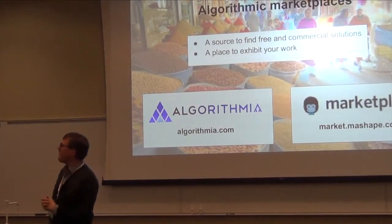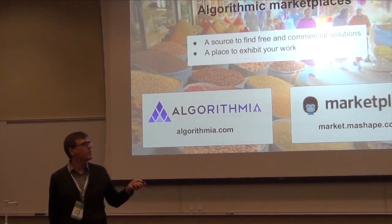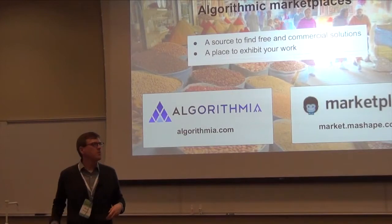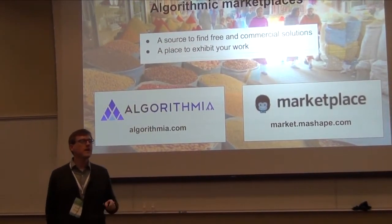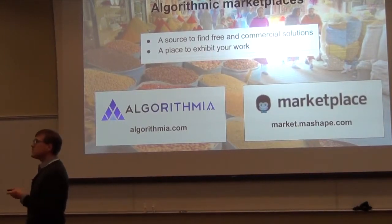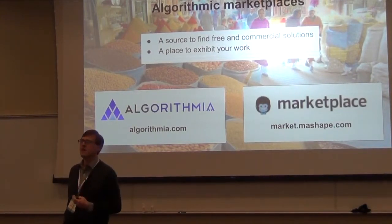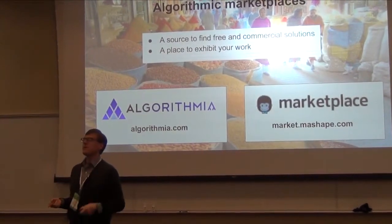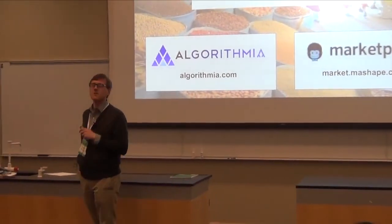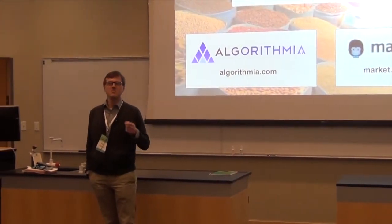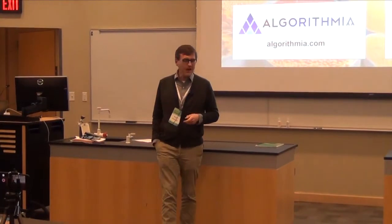There's a trend I'm excited about: what I call algorithmic marketplaces. The two I've worked with best are Algorithmia and the Mashup Marketplace. These are places where you can find free and commercial APIs that people are making readily available. It's a great place to go look and say, can I find an API that solves my problem? But it's also potentially a really cool place for you to exhibit your work. You could potentially start a business through Algorithmia — offer a cool service there, they provide all the plumbing, take some cut, and suddenly you're in business.